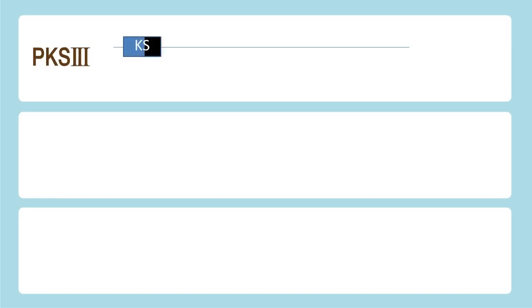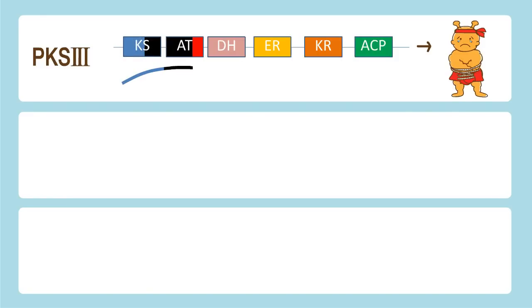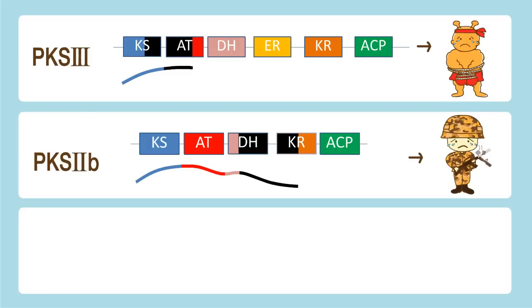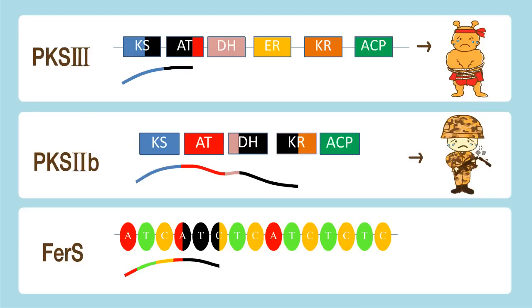We studied the function of the three genes by disrupting each gene with a selectable marker. When the selectable marker interrupts the DNA strand, the translated protein becomes truncated and non-functional. Visually, this is analogous to a tied-up boxer, a soldier with a broken gun, or a broken drill — all rendered unable to perform their function.